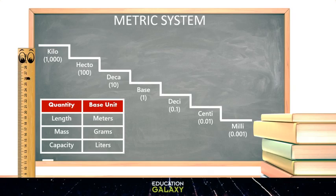They then use prefixes to represent place value. We can use this diagram of stairs to help represent the different measurements. When you move left up the stairs the decimal moves left. When you move right down the stairs the decimal moves right.